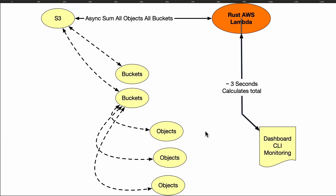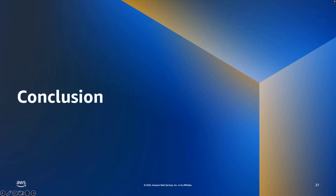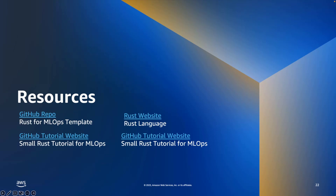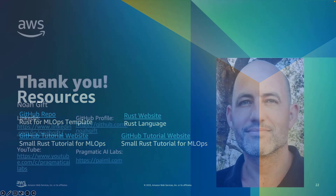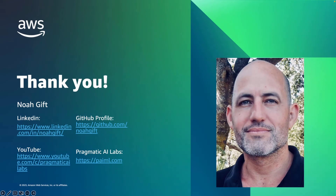That's it for this presentation. I hope you learned about the exciting things about Rust. We're going to talk about Rust for ML Ops and SageMaker in later presentations, and I'd encourage you to explore Rust on your own and look at the following resources. We have a GitHub repo which is a Rust for ML Ops template, with many examples of using Rust for ML Ops on the AWS platform. There's also a tutorial covering lecture notes from a Duke graduate cloud computing course, the Rust language website, and a GitHub tutorial website. Thank you very much — you can reach me on LinkedIn, YouTube, GitHub, and also my site, Pragmatic AI Labs.